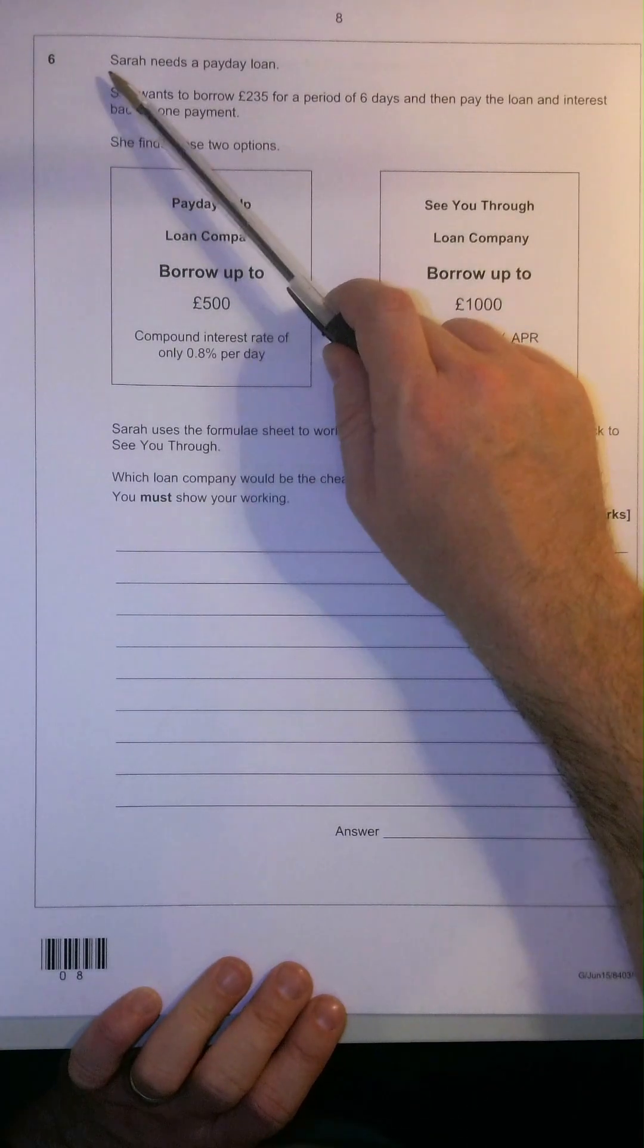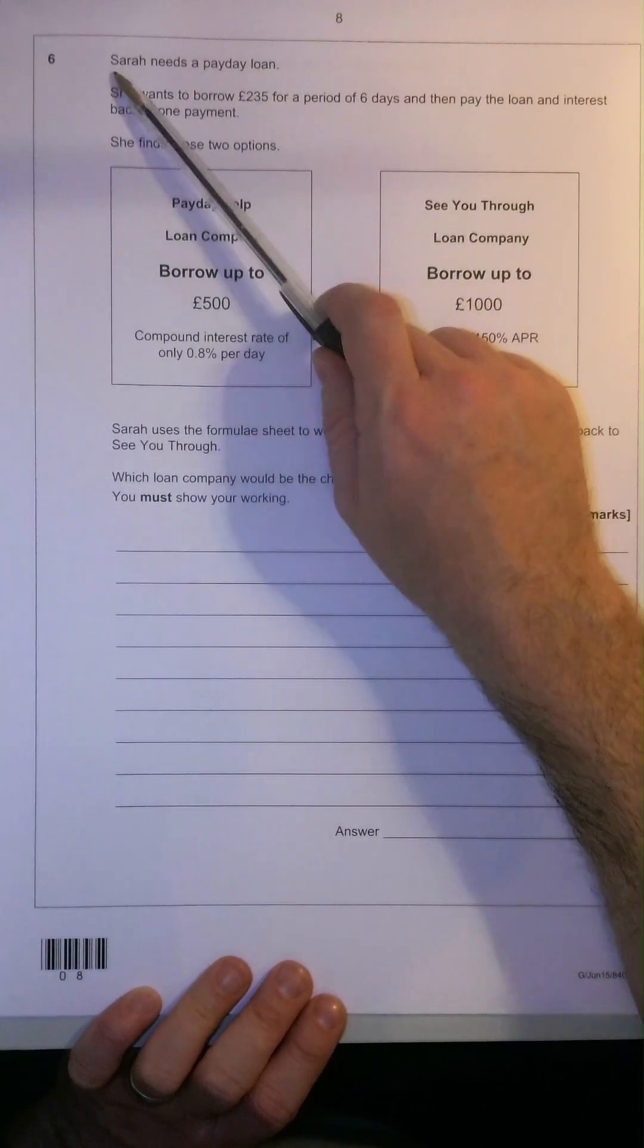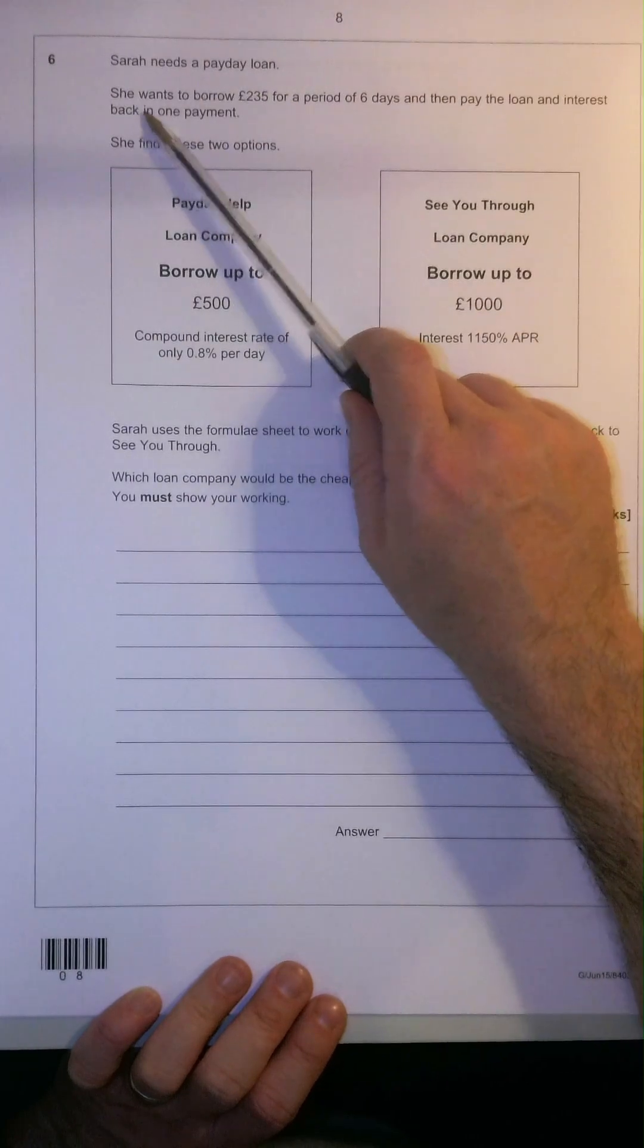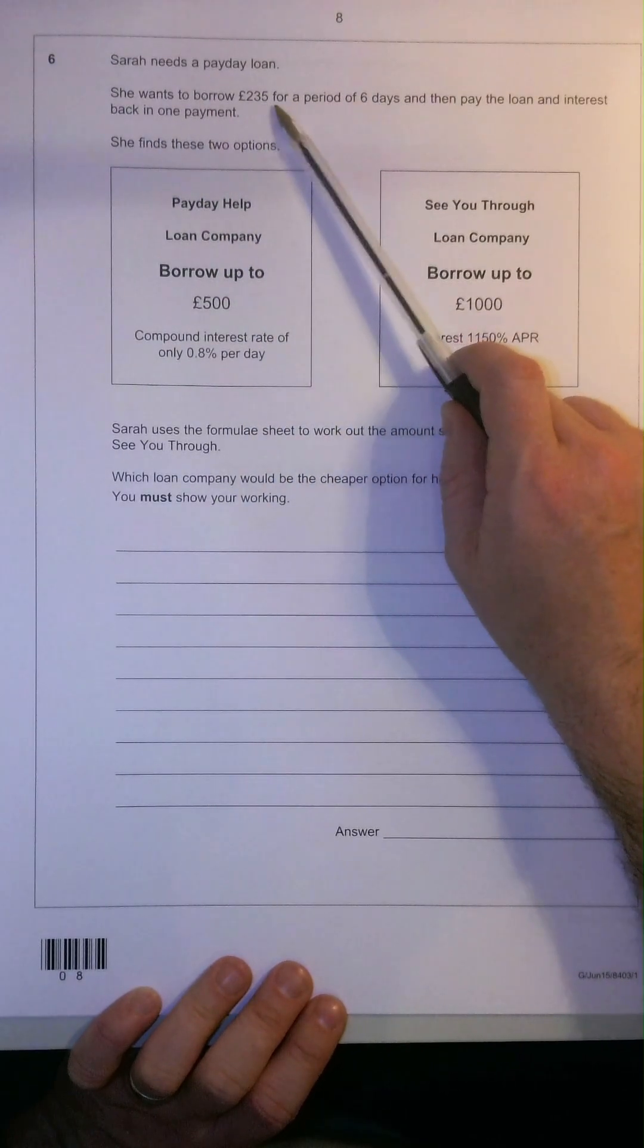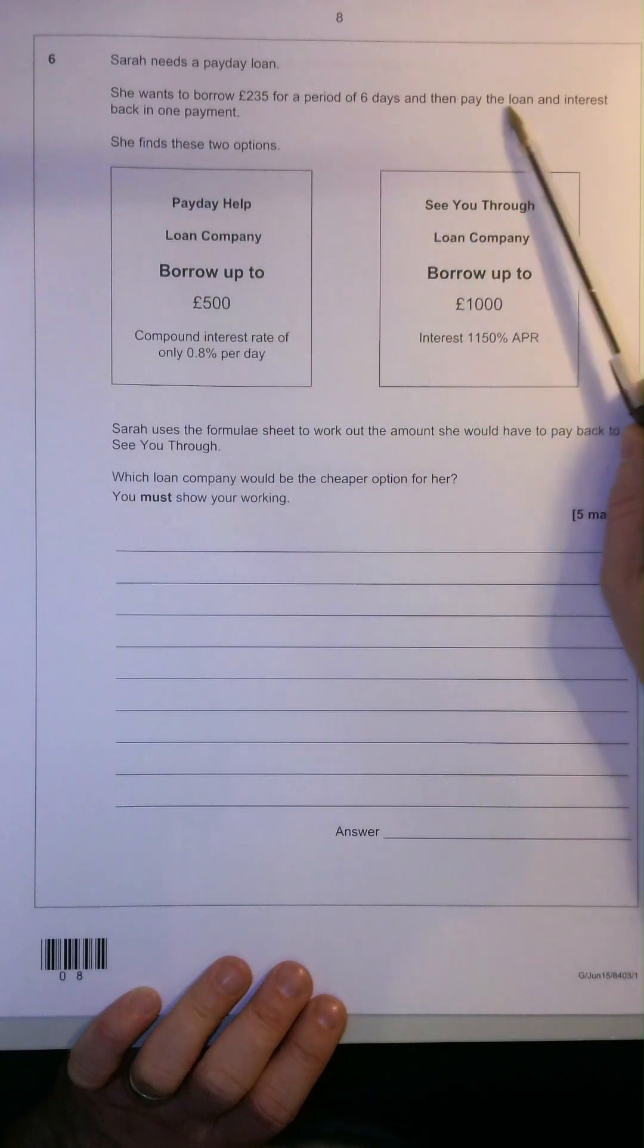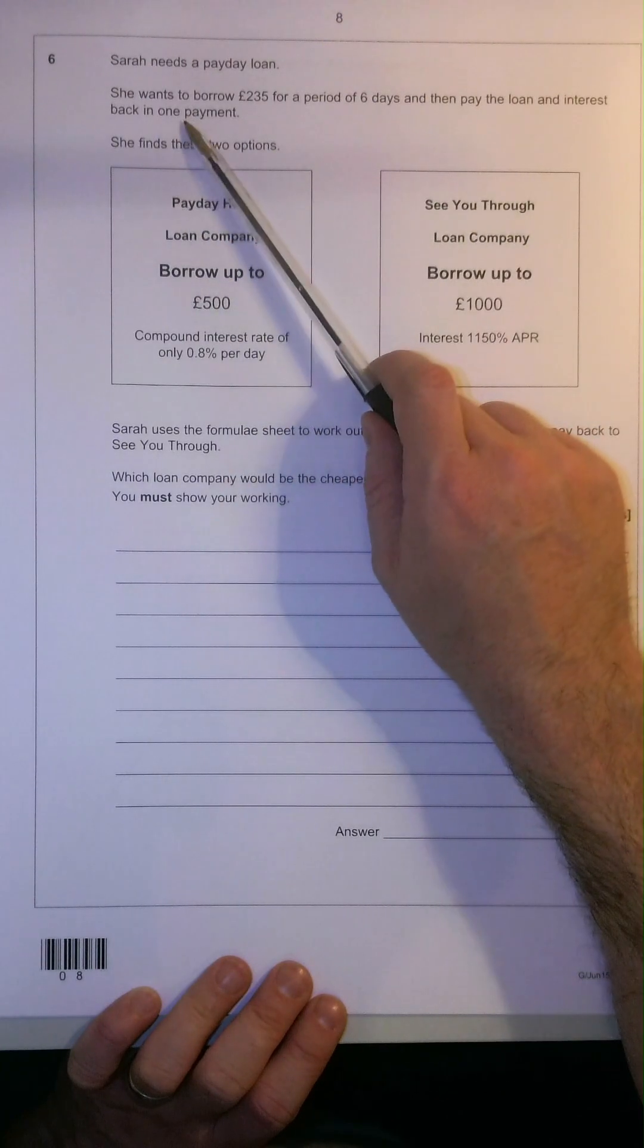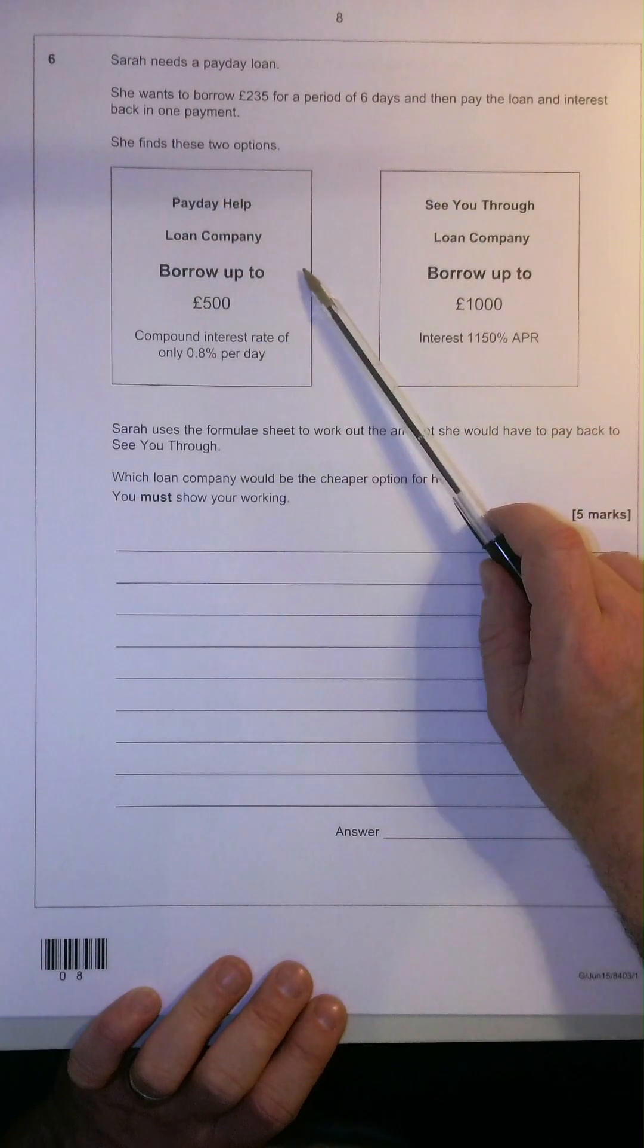This is a question that requires us to work out payday loan interest. Sarah needs a payday loan, she wants to borrow £235 for a period of just 6 days and pay the loan and interest back in one payment. Now she's found these two options.